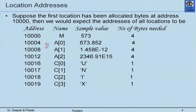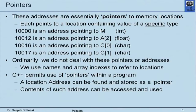Ordinarily we have nothing to do with these addresses — we deal only with the name and the corresponding value. However, it is possible to deal with these addresses, which are actually pointers to memory locations because they point to specific memory locations. So 10000 is an address pointing to m (int type), 10012 points to a[2] (float type), 10016 points to c[0], and 10017 points to c[1].